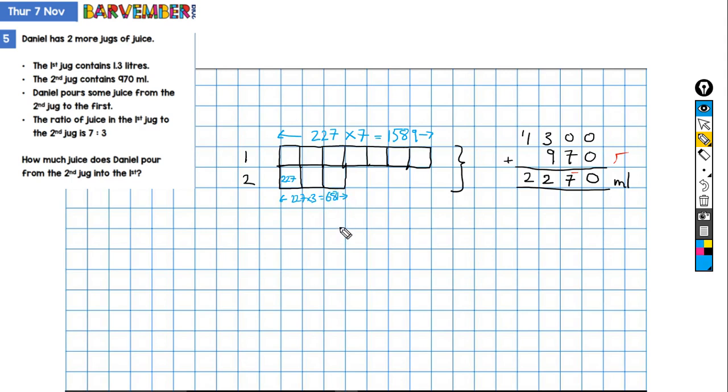Okay. All right. So now I can work out how much was poured because in the second situation, the first jug has 1,589 when originally it had 1,300. So we need to have just the difference between that and 1,300, which is 289. So we know that 289 millilitres was poured into the first jug.